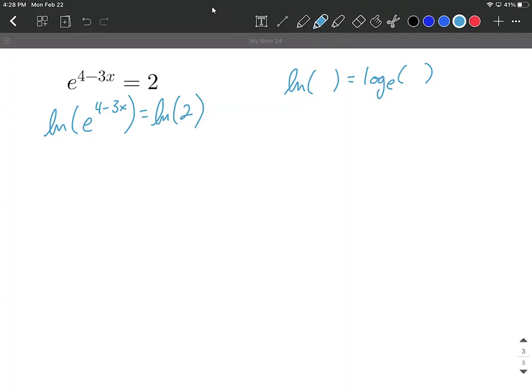All right, so like I mentioned, on the left-hand side, you get this nice canceling out. So you're going to be left with the exponent: 4 minus 3x. And on the right-hand side, we have natural log of 2, just comes down.